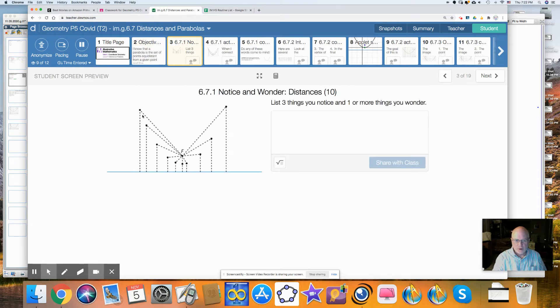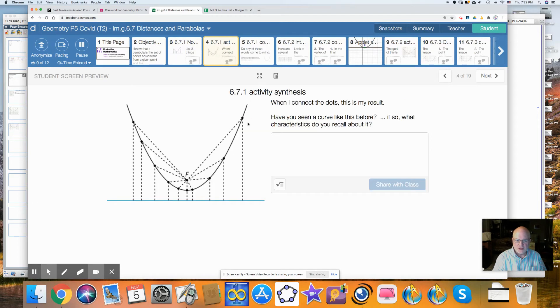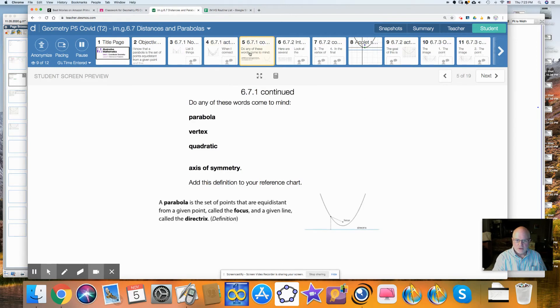We had a notice and wonder at all these points, and a lot of people noticed and wondered different things. What I wanted you to get out of this was that this makes a curve, and this curve is called a parabola. Maybe you've seen it before. Maybe you didn't know that the definition of a parabola is the set of points that are equidistant from a point, the focus, and a line, the directrix. So maybe these words come to mind: parabola, vertex, quadratic, x squared, y, axis of symmetry. There's going to be an axis here that makes this symmetrical on either side. And you should add this definition to your reference table.